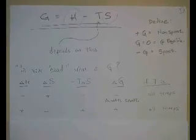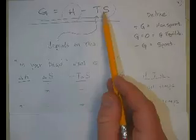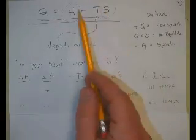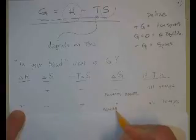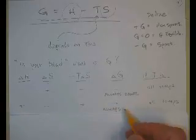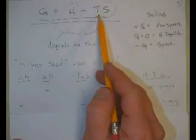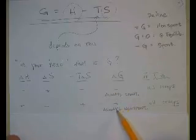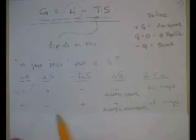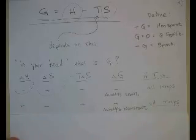Secondly, let's say H is positive — meaning it's endothermic — and S is negative — meaning the system is becoming more organized. That makes the term negative TS positive, and a positive plus a positive means delta G is always going to be positive — the reaction is always non-spontaneous, at all temperatures. If it's endothermic and becoming more arranged, it's not going to go by itself. You're going to have to put energy in to make it happen.